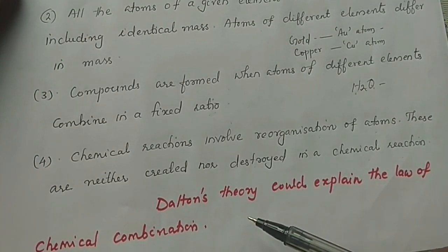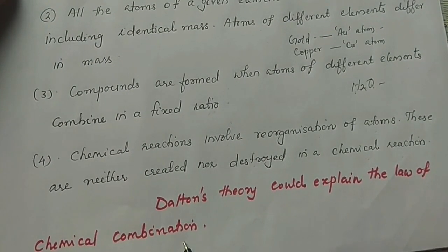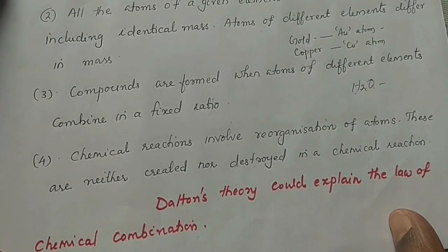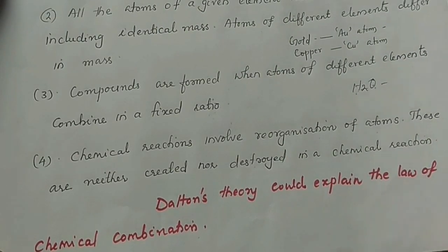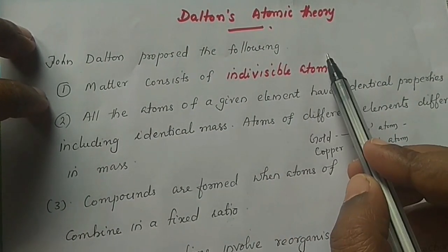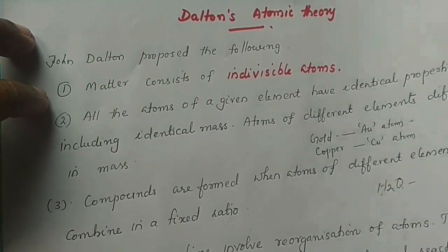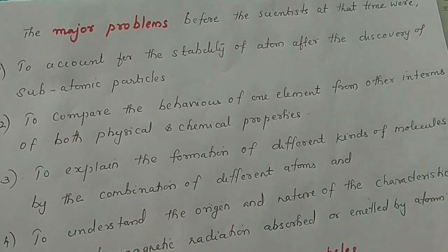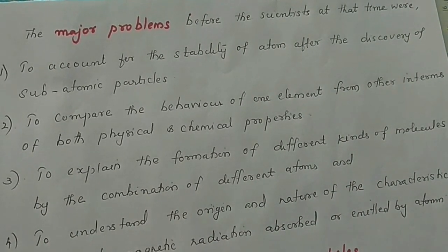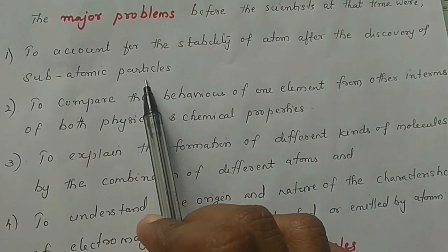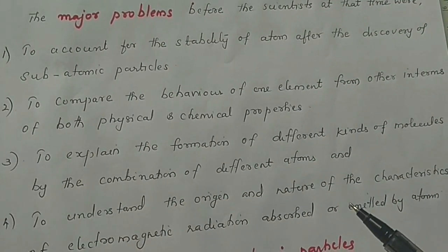Dalton's atomic theory could explain the laws of chemical combination. However, it had major problems — it could not account for the stability of an atom after the discovery of subatomic particles.